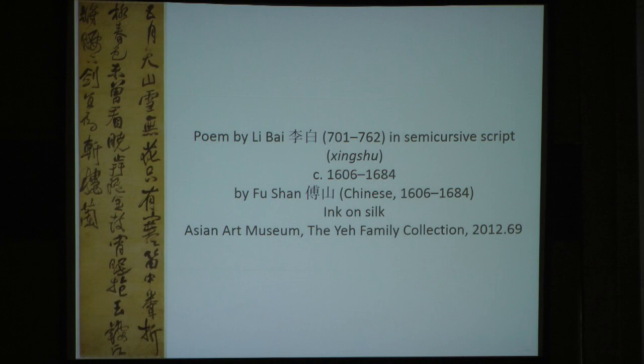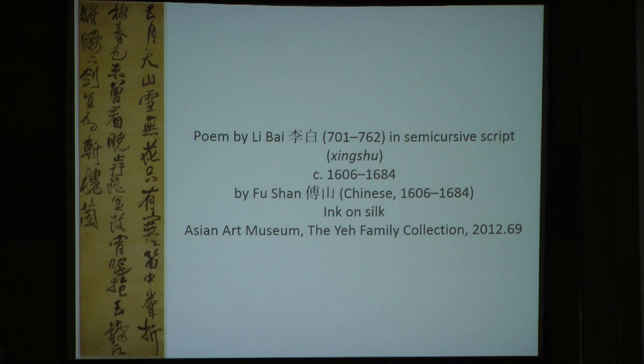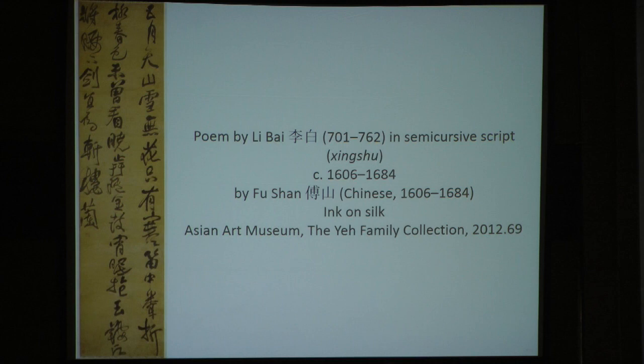One of the strengths of this collection is its Ming and Qing materials — what in a Chinese context would be later materials, certainly from the 17th century on; there are some really wonderful pieces. Looking at the tombstone information about this particular work: it's a poem by Li Bai in semi-cursive script by Fushan. Fushan is a 17th century bureaucrat, scholar, and calligrapher who has taken a poem written by someone else.